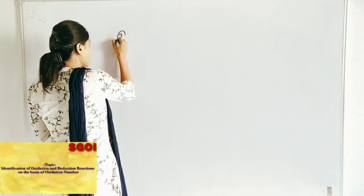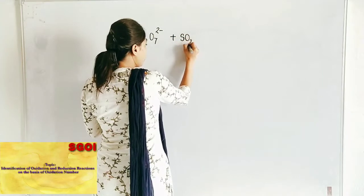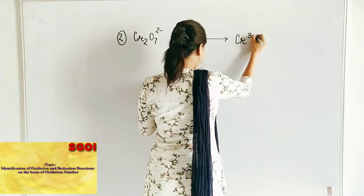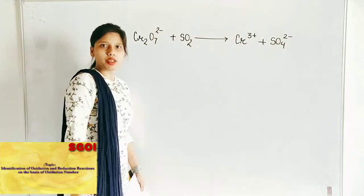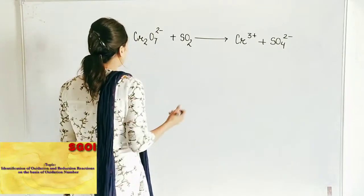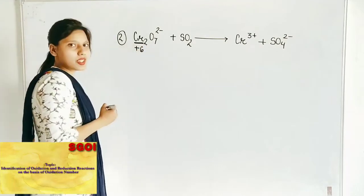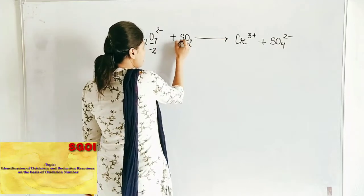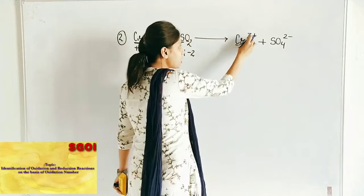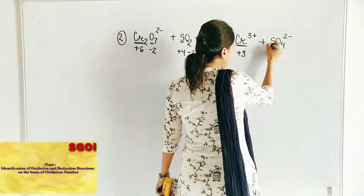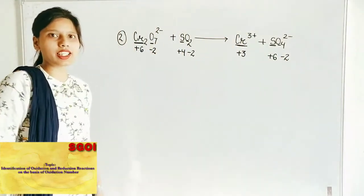Question number two: Cr2O7 2-minus plus SO2 gives Cr3+ plus SO4 2-minus. To prove this reaction belongs to redox, write the oxidation numbers. For Cr in Cr2O7 2-, the oxidation number of Cr comes out to plus 6. Oxygen is minus 2. For sulfur in SO2, oxidation number is plus 4. Oxygen is minus 2.